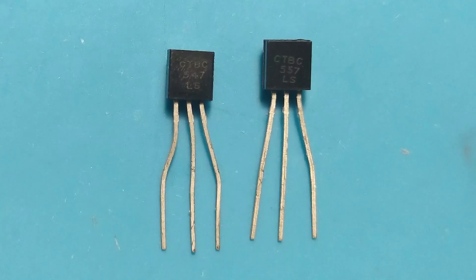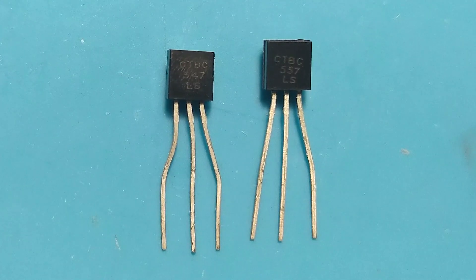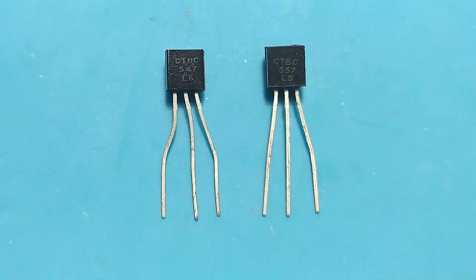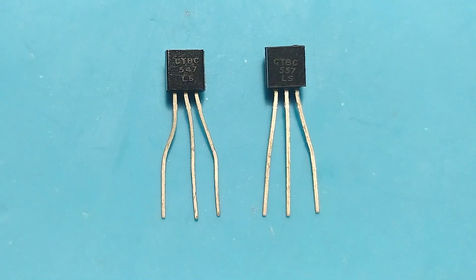Specifically, the well-known BC547 and BC557 transistors. Before moving on to measuring it with the multimeter, we must know that the bipolar transistor is a semiconductor with three terminals, called base, emitter and collector.